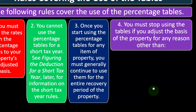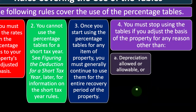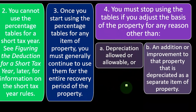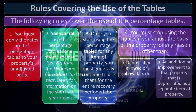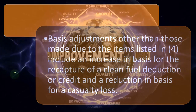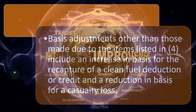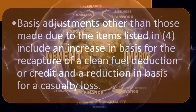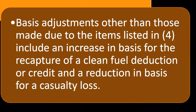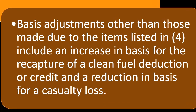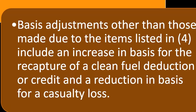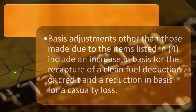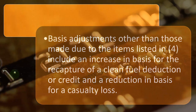Consistency is a standard rule for tax as well as accounting in general. You must stop using the tables if you adjust the basis of the property for any reason other than: (A) depreciation allowed or allowable, or (B) an addition or improvement to that property that is depreciated as a separate item of property. Basis adjustments other than those include an increase in basis for the recapture of a clean fuel deduction or credit, and a reduction in basis for a casualty loss. These are unusual situations where some other benefit is happening — for example, if they give you a credit, that could adjust the basis; otherwise you'd be double-dipping by getting both an expense and a credit.